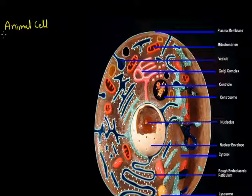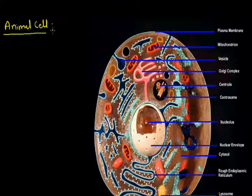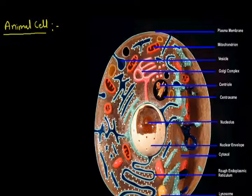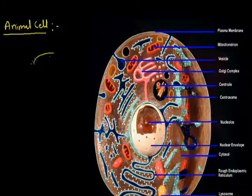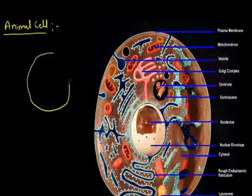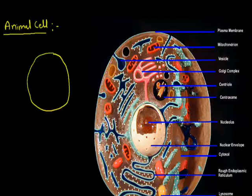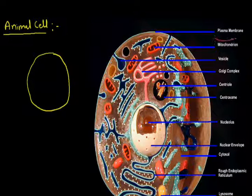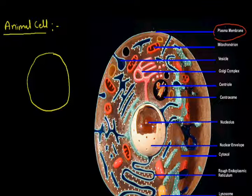The animal cell is present in all animals. The basic feature of animal cells is that they have no cell wall in their structure. They have an outermost membrane we call the cell membrane, also known as the plasma membrane. This is the outermost layer of the cell.